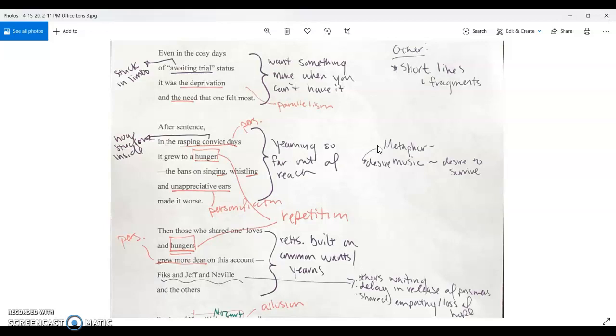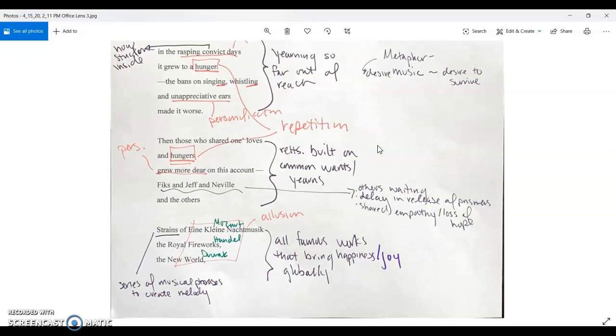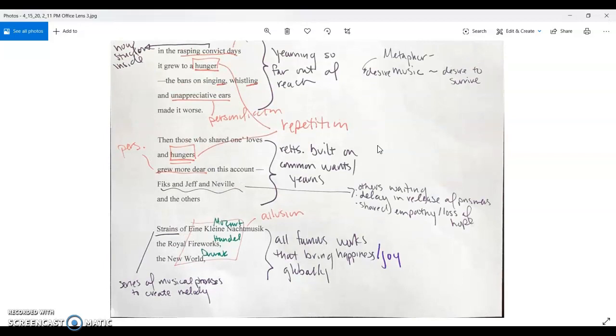The third stanza has rasping convict days as personification. He brings up hunger there and again, so he uses repetition to show that he's hungry for that joy that music brings. Unappreciative ears is also personification, and more hungers grew more dear is also personification. The repetition of hunger is really to point out that they just want to be able to feel joy, and that music is a way to do that. He found that connecting with other prisoners and reminiscing about the joys of music is one way that he kept on going.